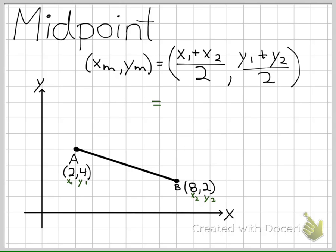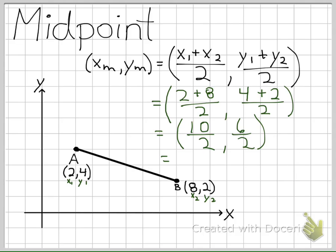So our midpoint will be the average of the x's, so that's 2 plus 8 divided by 2, and our y values, 4 plus 2 divided by 2, which we simplify, and we get 10 over 2 and 6 over 2, which gives us our midpoint is the coordinate 5, 3.